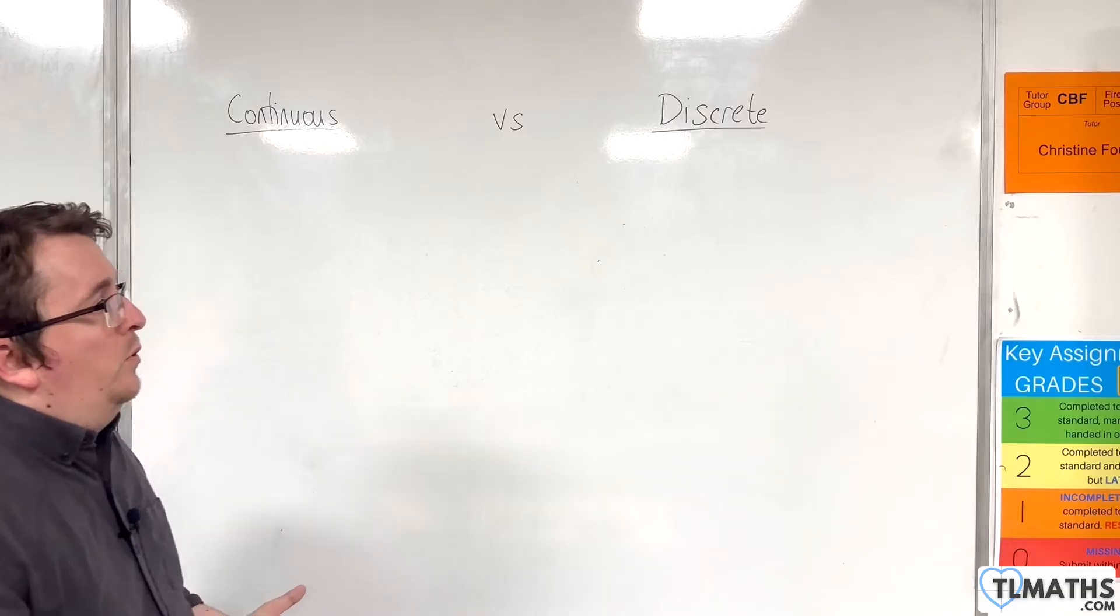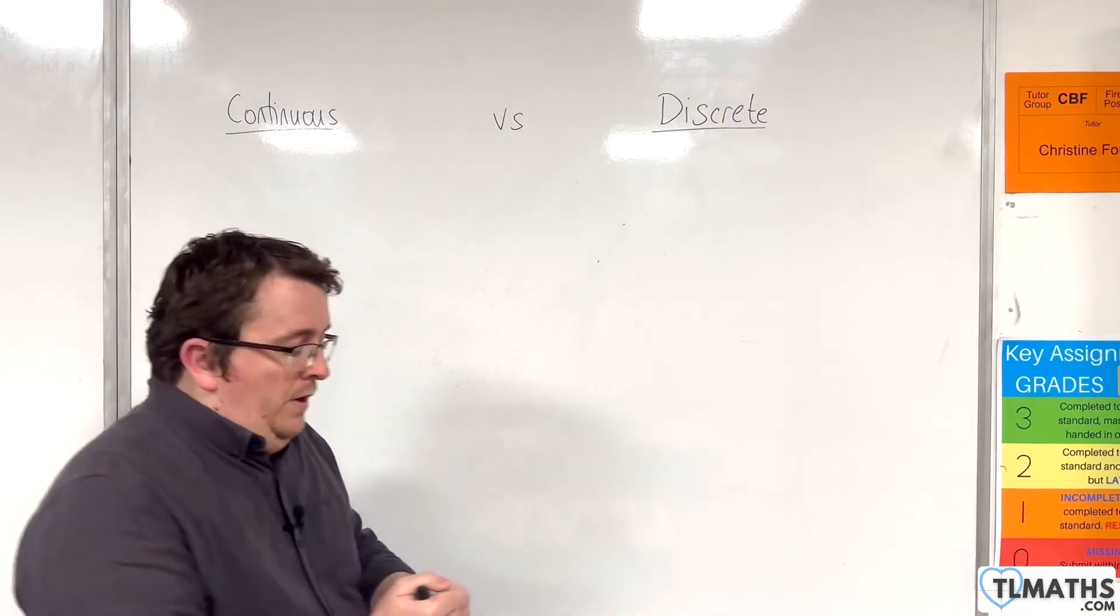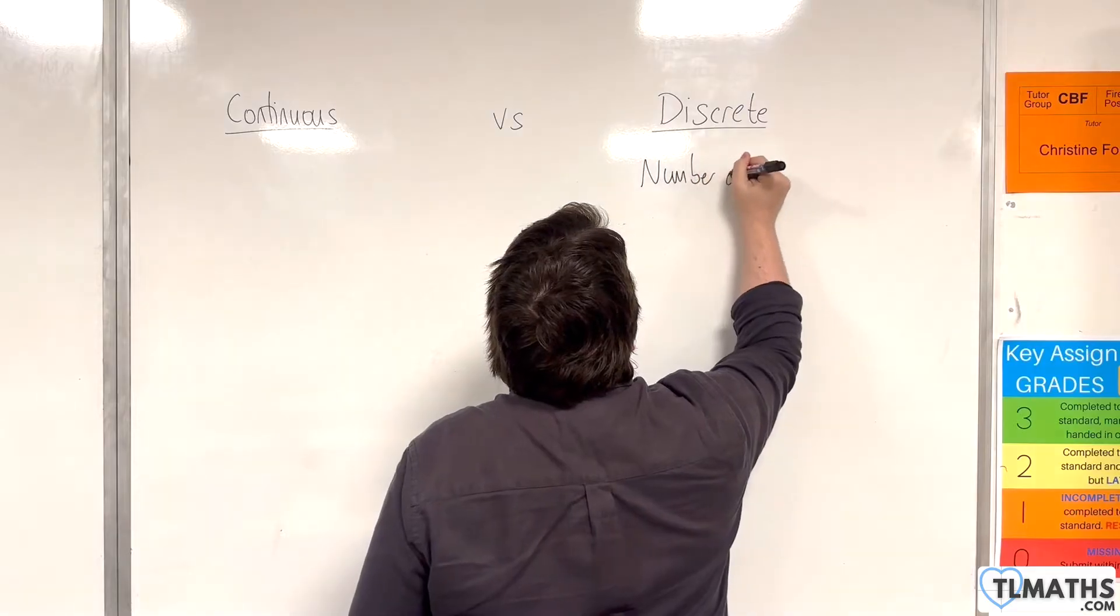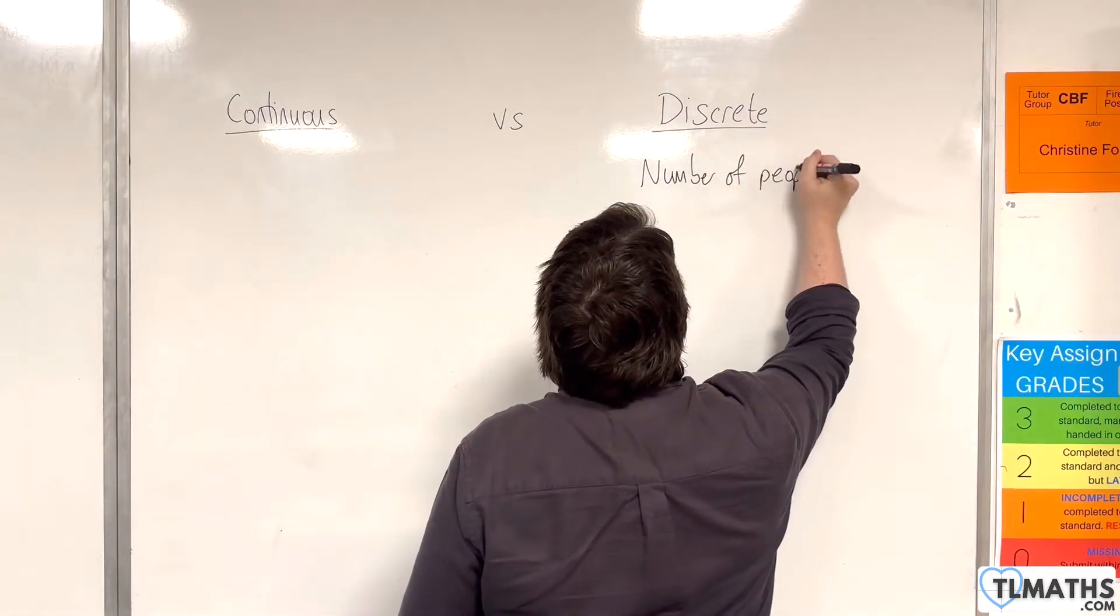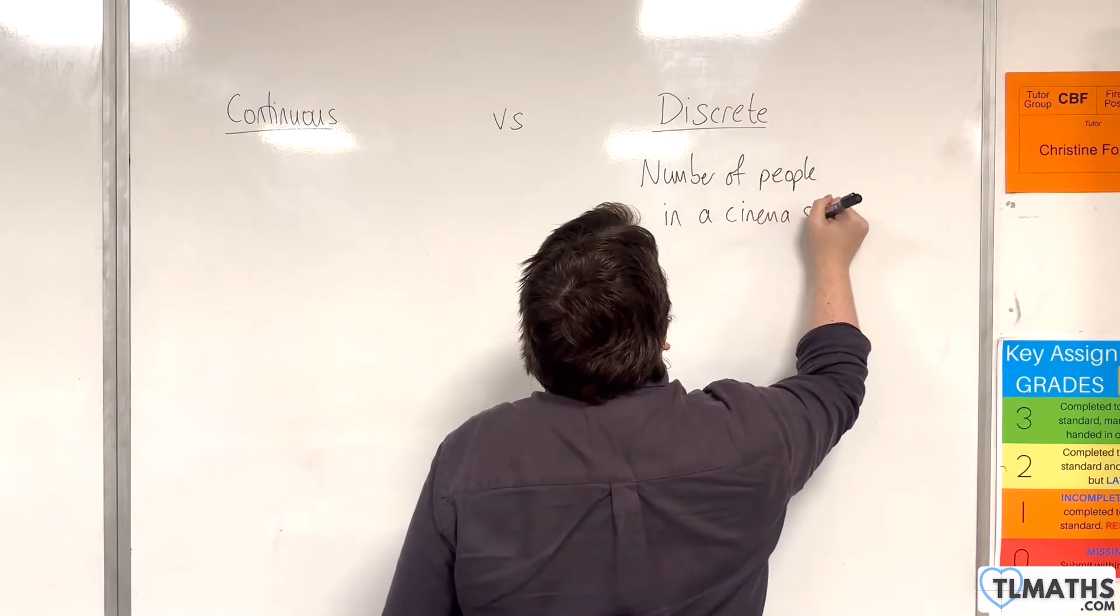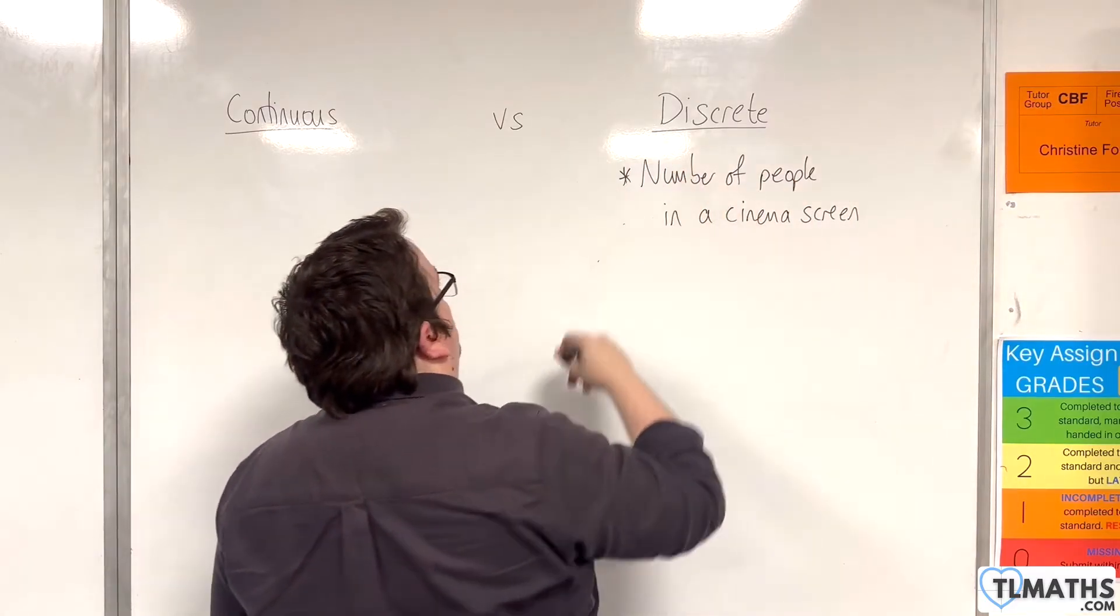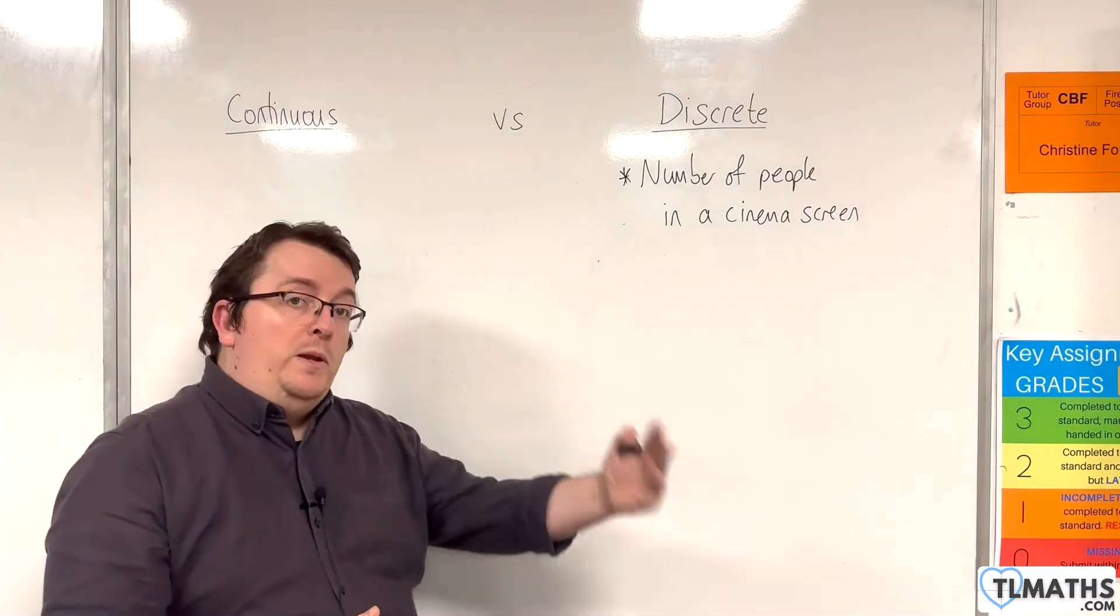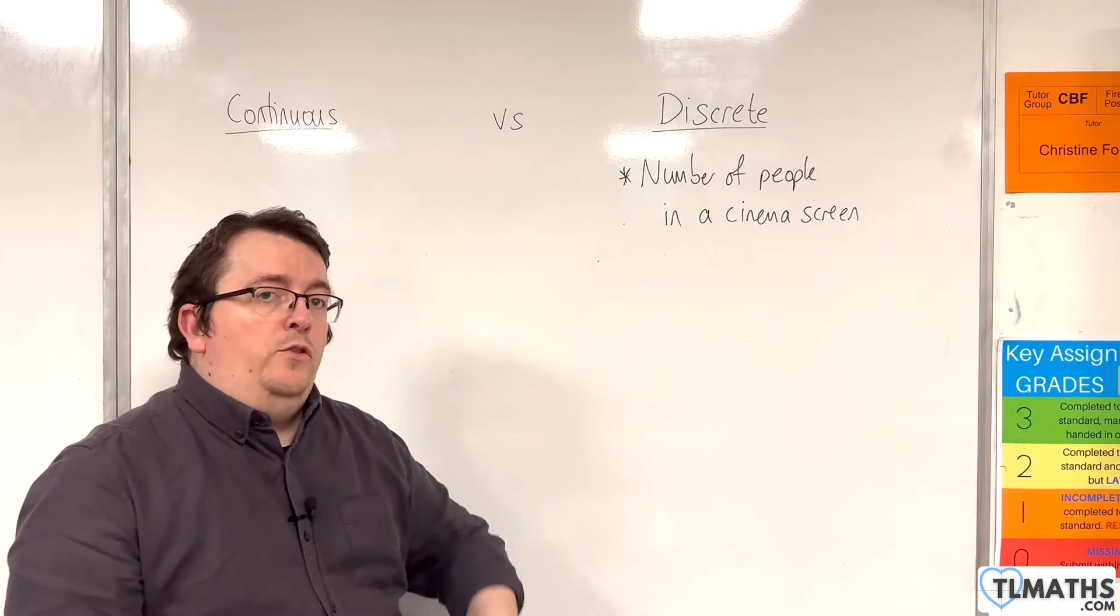So an example of discrete data would be something like the number of people in a cinema screen. Now the reason why that would be discrete data is because there may be 20 people or 21 people or 22 or 23 or 24.